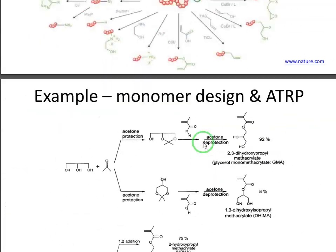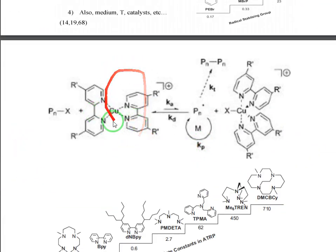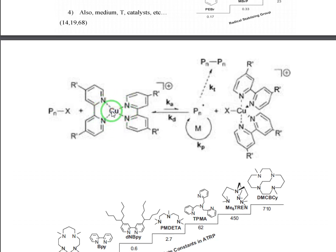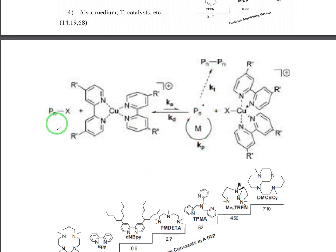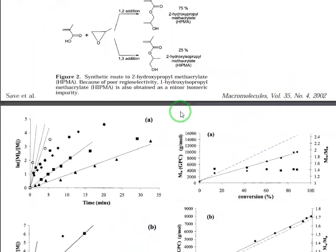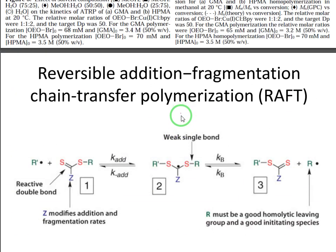For ATRP, we introduced complexing ligands with the transition metal, which had affinity towards the halogen. When the halogen is detached, a radical is formed and it does the propagation. Because the rate constant for the reverse reaction is higher, we get back again into the normal situation, and it's because we have an equilibrium state.